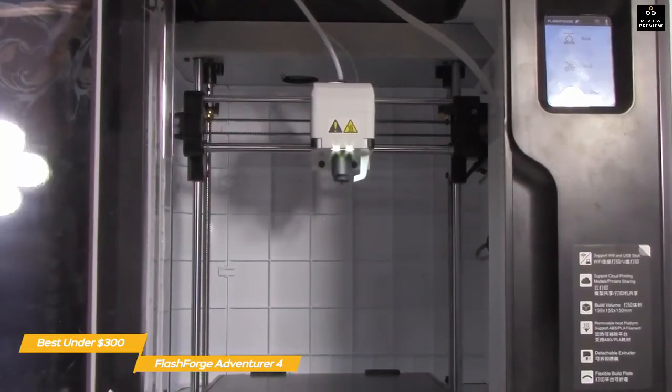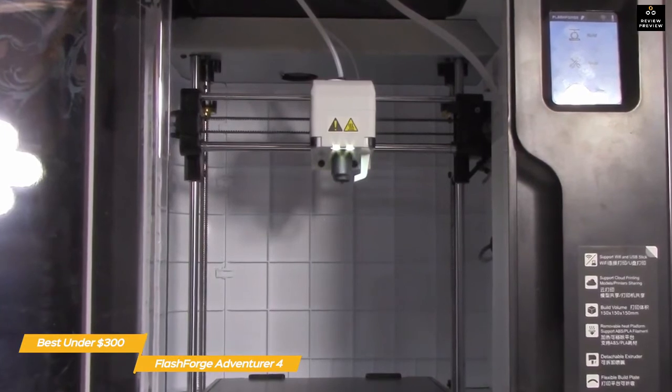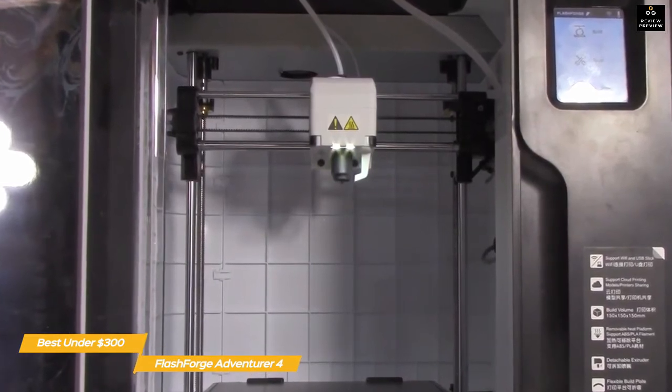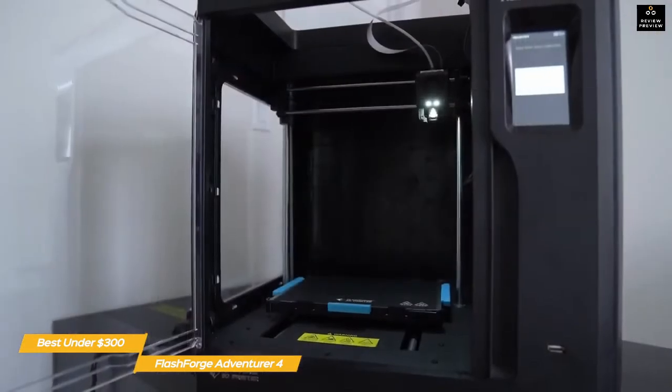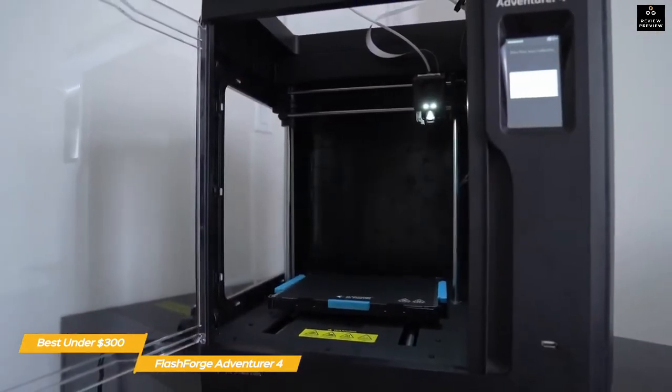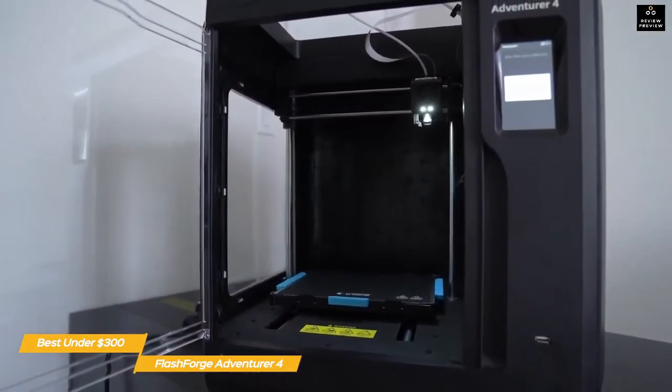Clear panels on the top and sides let you keep an eye on your print, and if you're not in the immediate area, a built-in camera will let you remotely monitor your print via smartphone. The clear front access door opens to the print bed, and on the right side is a smaller door that covers the filament reel.